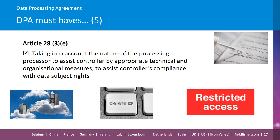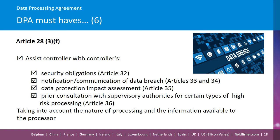Another requirement under Article 28 is that the processor has to assist the controller in terms of the controller's compliance with its own obligations to respect data subject rights when data subjects try to exercise those rights. This is qualified because it takes into account the nature of the processing, and the processor is supposed to assist the controller by appropriate technical and organisational measures. Similarly, the processor is required to assist the controller with the controller's own GDPR obligations in relation to security, notification of data breaches, and data protection impact assessments, including any prior consultation with the supervisory authorities.